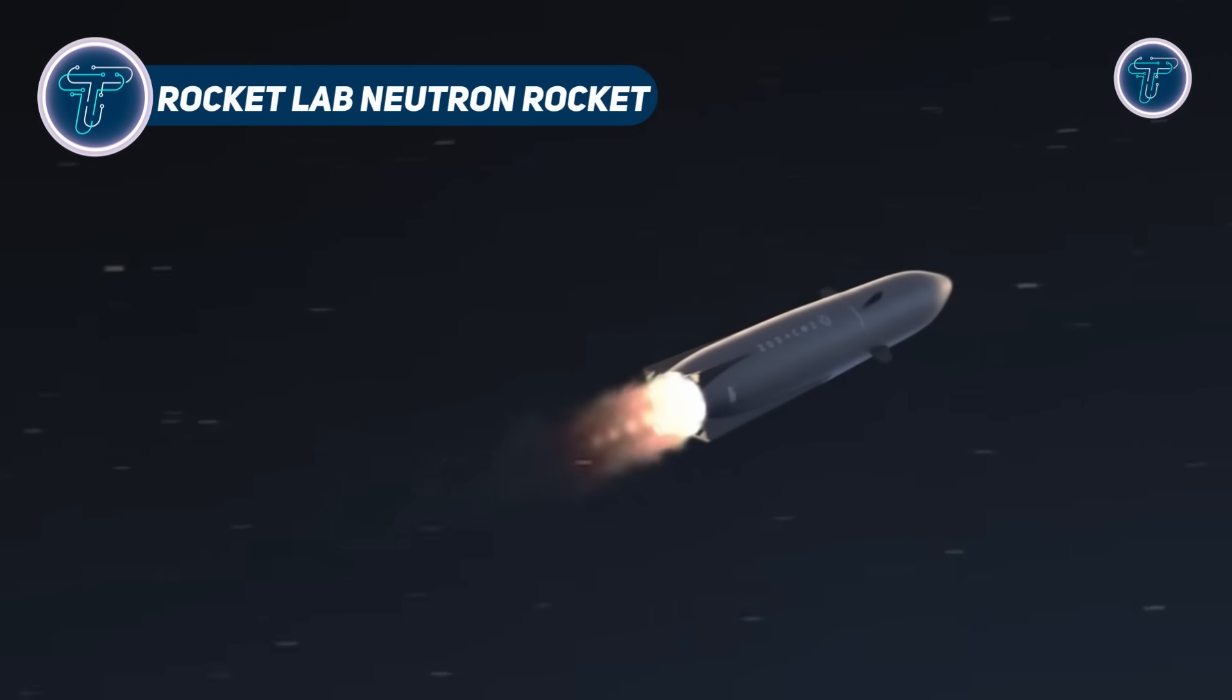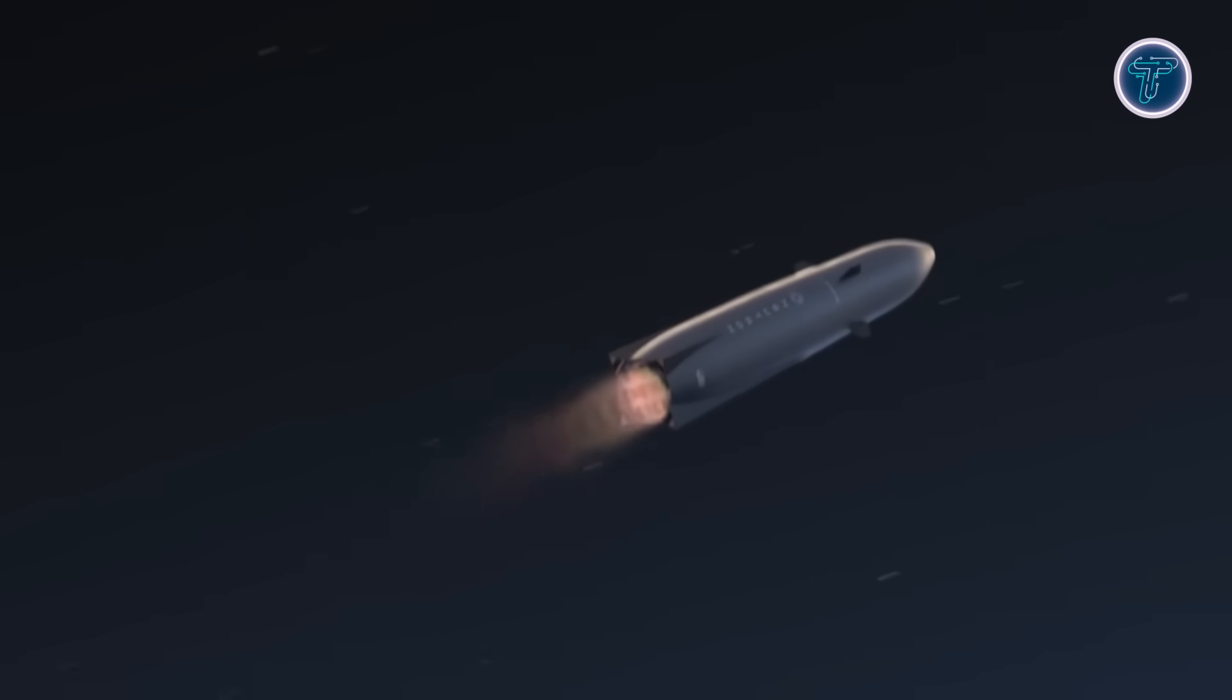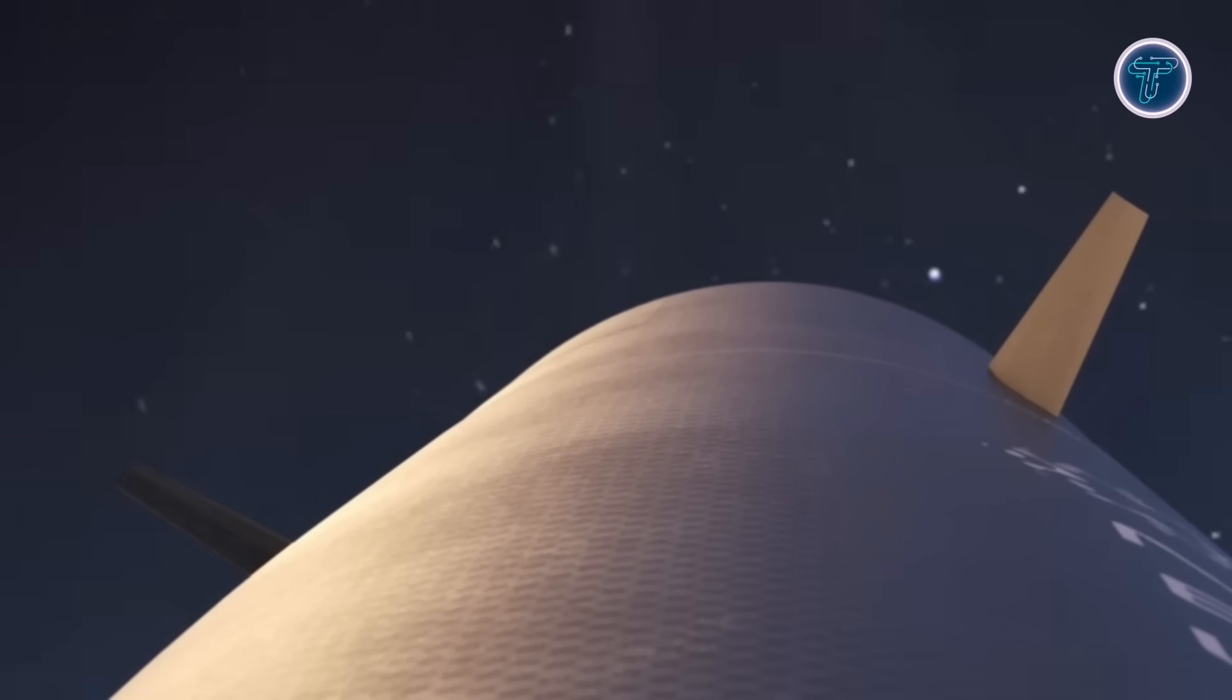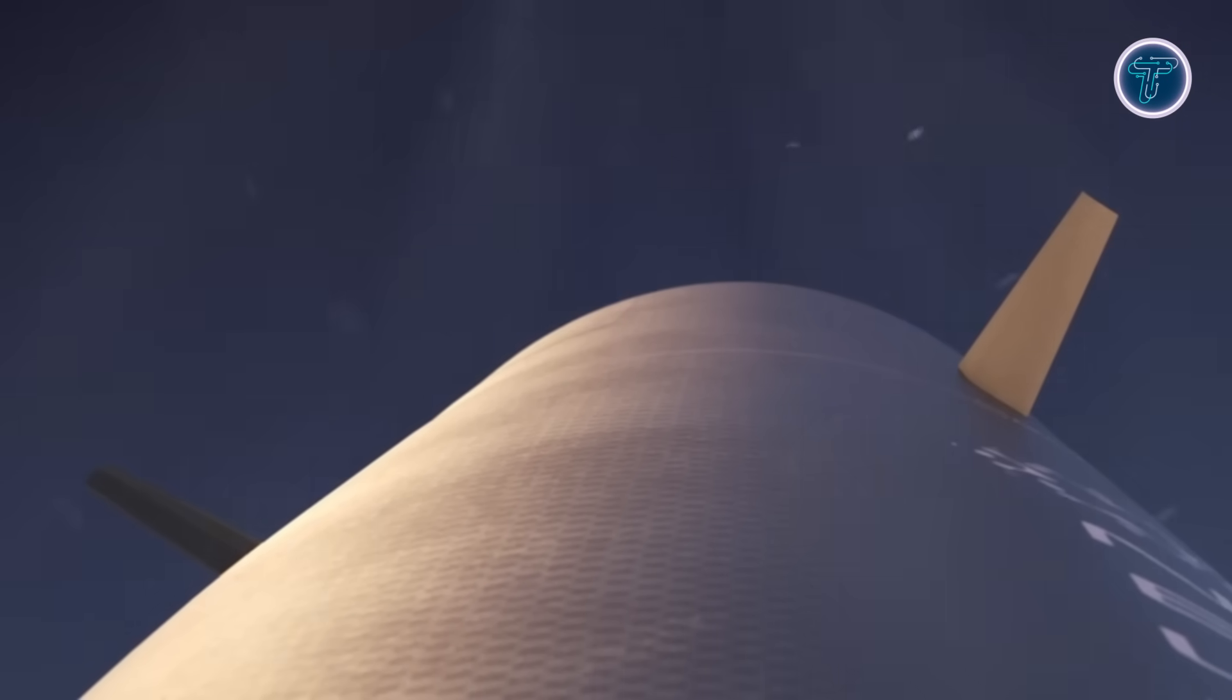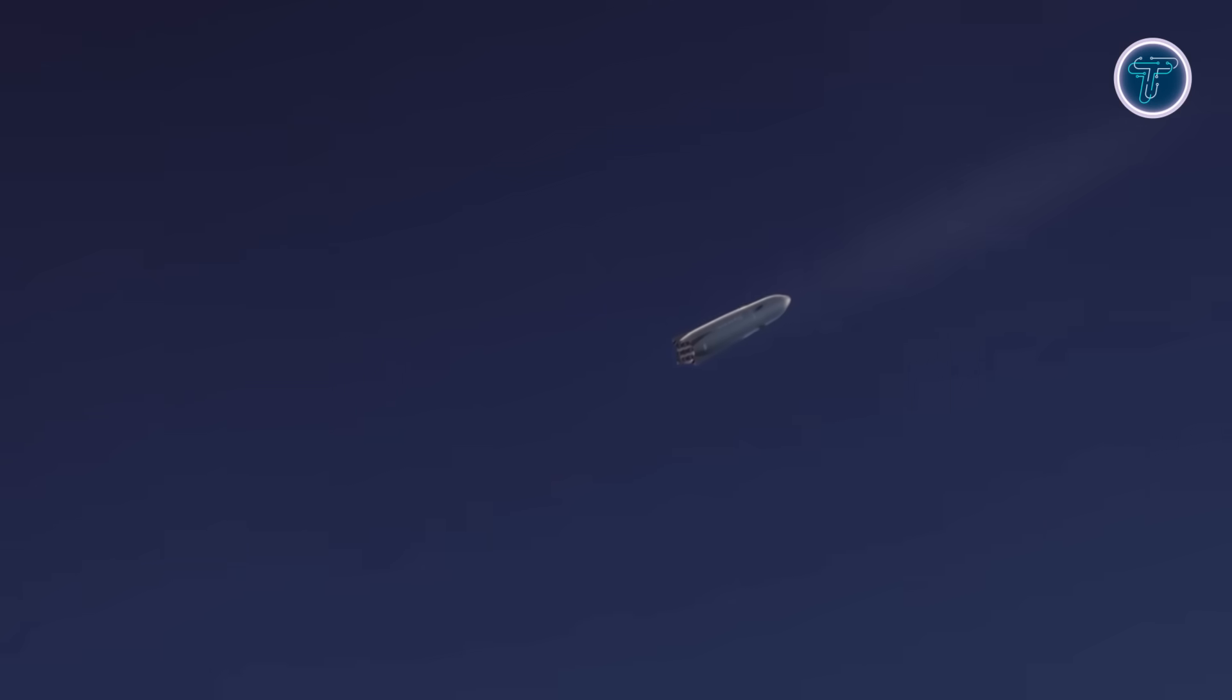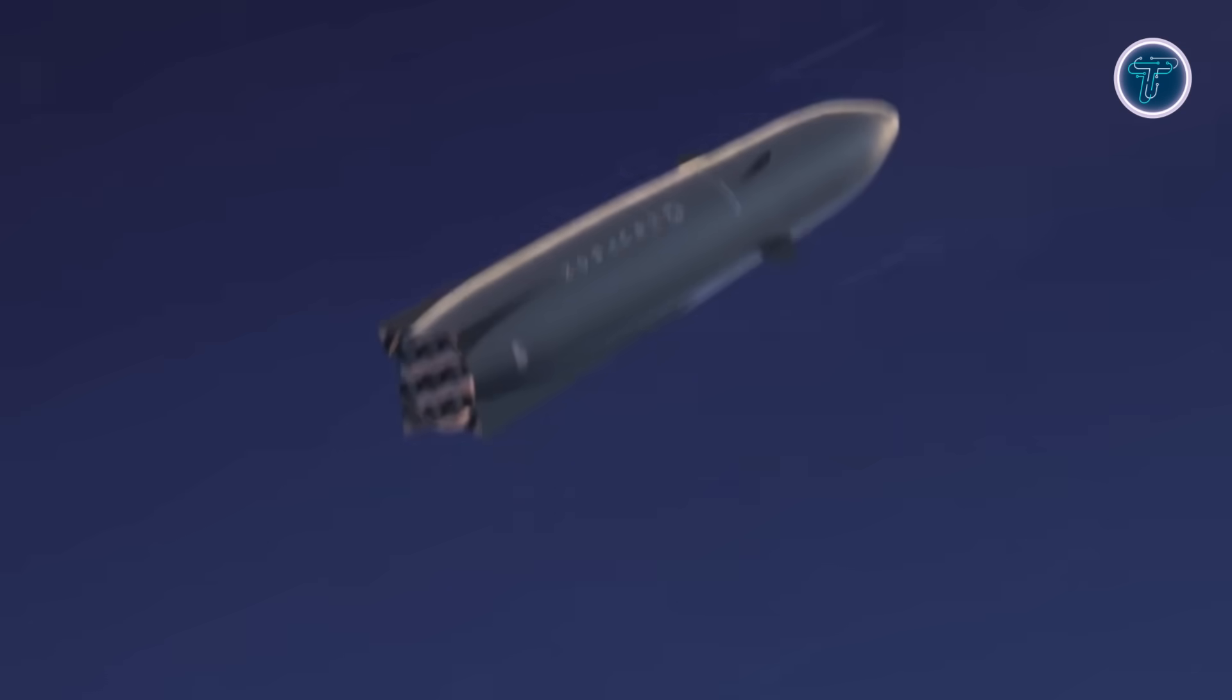Rocket Lab Neutron rocket. Rocket Lab's Neutron is a next-generation medium lift, reusable rocket engineered for satellite constellations, deep space missions and potential crewed flights. Built with carbon composite materials using automated fiber placement, Neutron offers a lightweight yet durable structure for rapid reuse and high reliability.